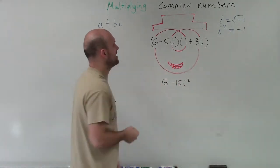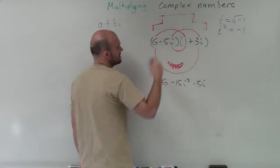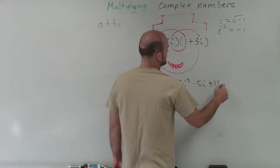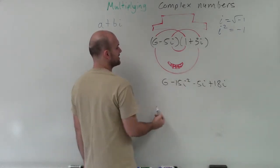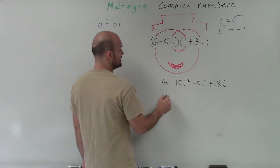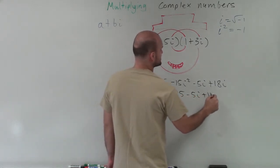Then we do the inner, which would be a negative 5i times 1, which would be a negative 5i. And then 6 times 3i, which would be a positive 18i. Now, remember, i squared represents negative 1. Negative 1 times negative 15 is a positive 15. So it would be 6 plus 15 minus 5i plus 18i.